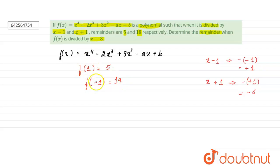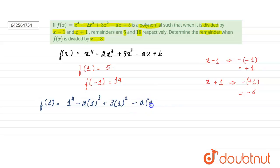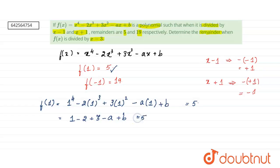Substituting x = 1: f(1) equals 1⁴ minus 2 times 1³ plus 3 times 1² minus a times 1 plus b, and this equals 5. So we get 1 minus 2 plus 3 minus a plus b equals 5, which simplifies to minus a plus b equals 3. This is our first equation.